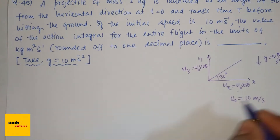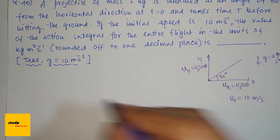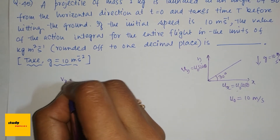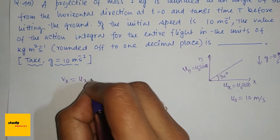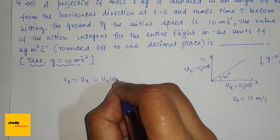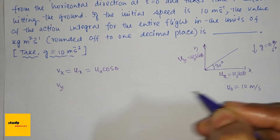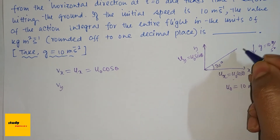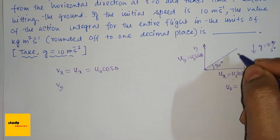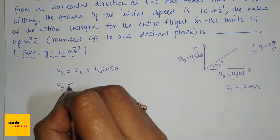In the x-direction there is no acceleration, so the final velocity v_x = u_x = u₀ cos θ. In the y-direction there is acceleration due to gravity, so v_y changes with time.